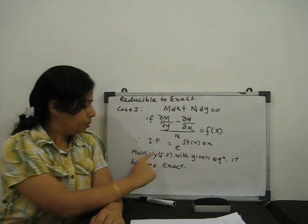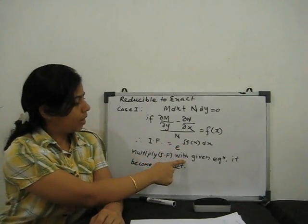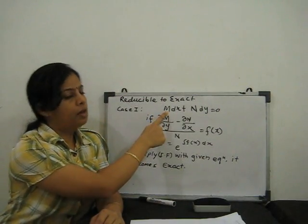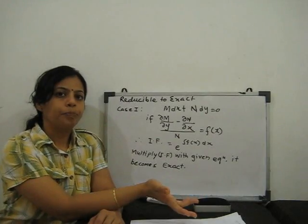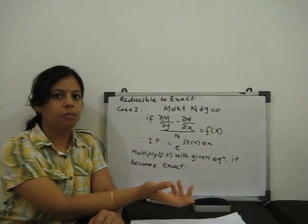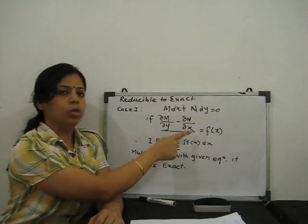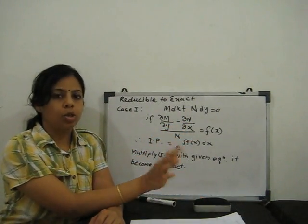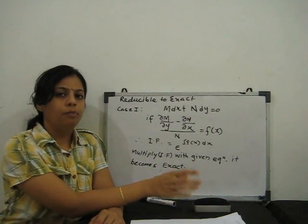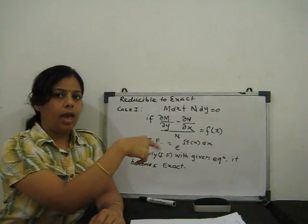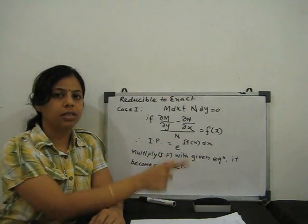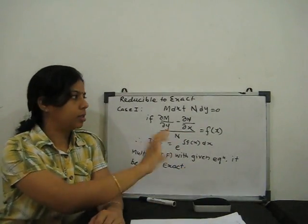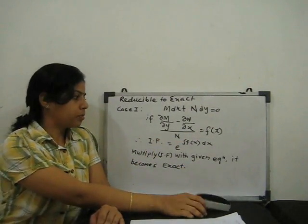Whatever integrating factor is found, multiply it with the given equation. After multiplying the integrating factor, we can see that our equation reduces to exact form. Then we check ∂M/∂y equal to ∂N/∂x — both are equal, so it is an exact equation. Then apply the exact solution: ∫M dx (y constant) + ∫N (terms not containing x) dy = C.